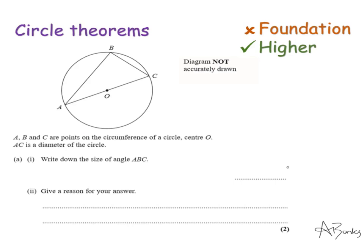Let's start looking at some exam questions. This is a quick two-mark question: A, B, and C are points on the circumference of the circle and O is the centre, so AC is the diameter. It says write down the size of angle ABC — this tells me it's something I should know. This is our first circle theorem: the angle in a semicircle is a right angle, so ABC is 90 degrees. For the reason: the angle formed in a semicircle is always a right angle.